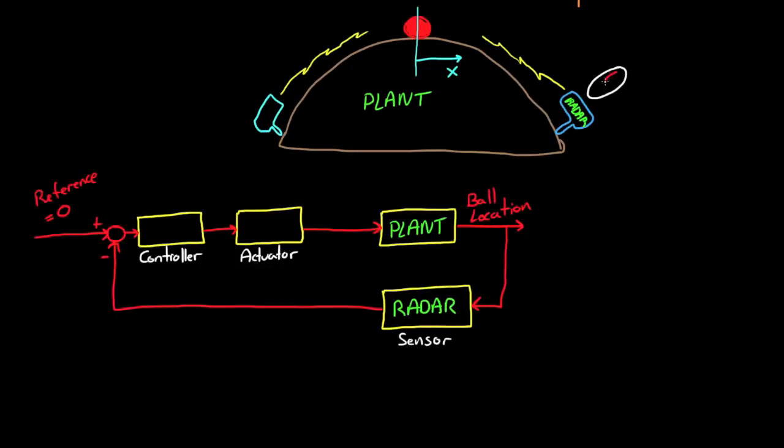Now for the actuator, maybe I could use variable speed fans, one on either side, that I can control the amount of wind that each one produces, which I can use to generate a force on the ball to blow it back up the hill. And I'll put the transfer function for the fan in the spot for the actuator.